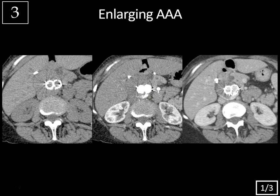Here we're looking at non-contrast, arterial phase, and delayed phase images of the abdominal aorta — a typical multiphase CTA evaluation for endoleak. The non-contrast images show no intrinsic hyperdensity within the excluded sac lumen, and the endograft appears normal. On the arterial phase, there's contrast within the endograft (normal), but also contrast leaking into the excluded aneurysm sac (abnormal). The non-contrast confirms this isn't calcification. On the delayed phase, there's continued accumulation of contrast spilling out into the excluded aneurysm sac, confirming endoleak.